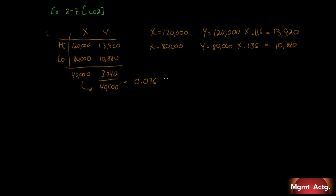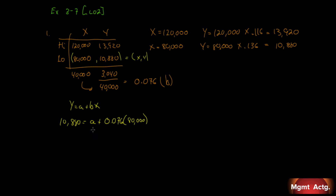Dividing $3,040 by 40,000 gives us 0.076 — that is our B value, which is the variable cost per kilometer. To find the fixed cost element A, we use Y = A + BX. We know B is 0.076, and we'll use the low data point: 10,880 = A + 0.076 times 80,000. Solving for A gives us $4,800.